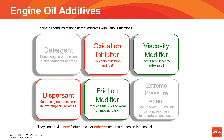Engine oil contains many different additives with various functions. Here's a quick look at the various additive packages and those functions. Detergent keeps engine parts clean in high-temperature areas. Oxidation inhibitors prevent oxidation and rust. Viscosity modifiers increase the viscosity index in the oil. Dispersants keep engine parts clean in low-temperature areas. Friction modifiers reduce friction and wear on moving parts. Extreme pressure agents control wear on engine parts at very high temperatures and loads. Additives can provide new features to oil or enhance features already present in the base oil.